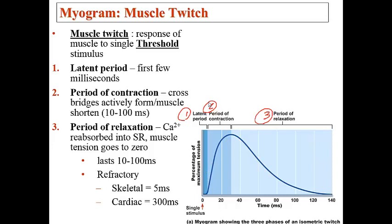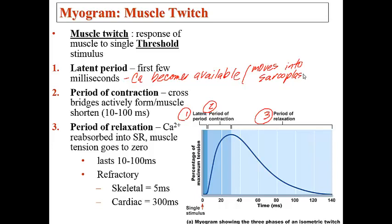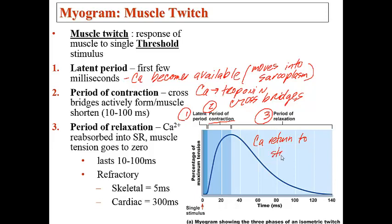During the latent period, calcium is leaving the sarcoplasmic reticulum and flooding into the sarcoplasm — this is when calcium becomes available. Once in the sarcoplasm, calcium binds to troponin, which uncovers the binding sites so crossbridges can begin to form. Crossbridges form during the contraction period. The relaxation period is when calcium returns to storage in the sarcoplasmic reticulum.